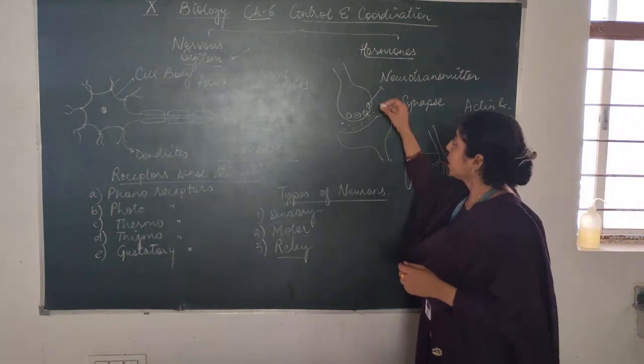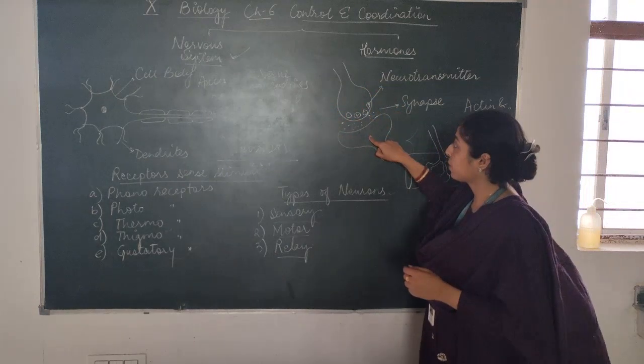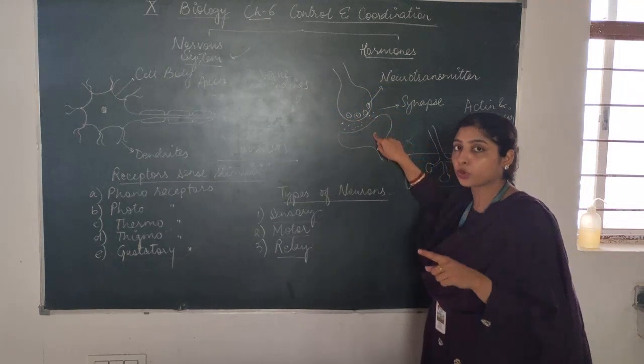This, you see, is a nerve ending and a dendrite of another neuron.